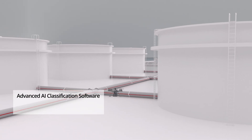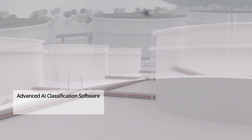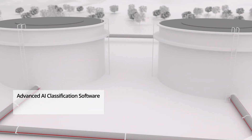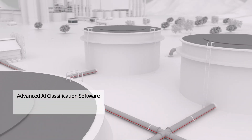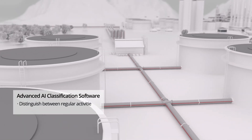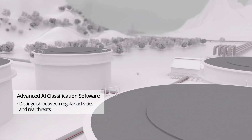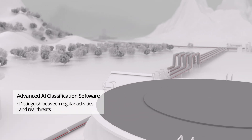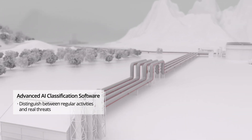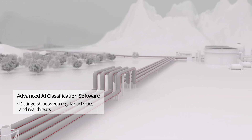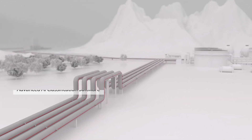AP Sensing offers the most advanced AI event classification software, distinguishing between signals generated from regular everyday activities and those from real threats.